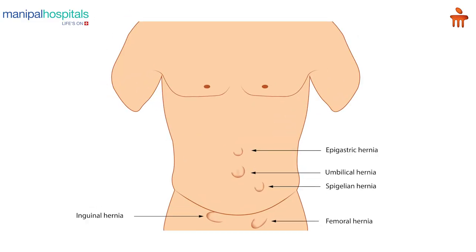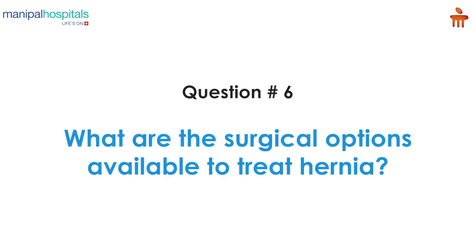Hernias can be umbilical, para-umbilical, inguinal, femoral, and incisional. Since there is a weakness through which the body's internal contents are coming out, the only treatment option for hernias will be surgical.